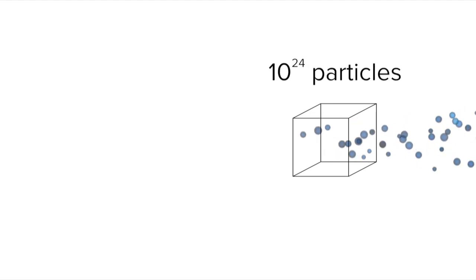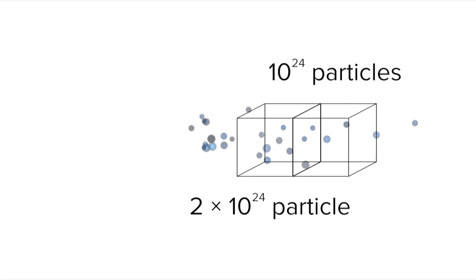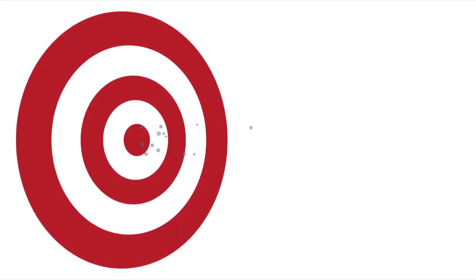And once the bunch passes through one cubic centimeter, it can pass through more, and more, and more. With so many targets, the chances of a collision is way, way higher.